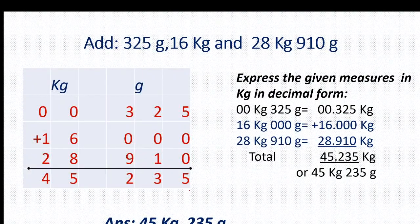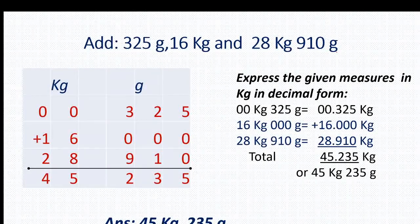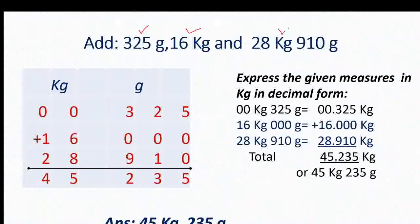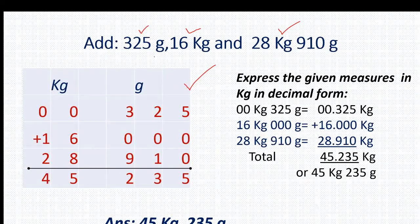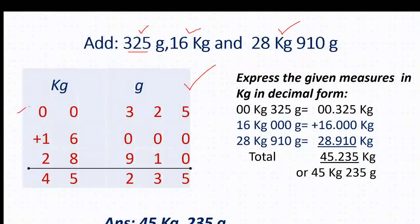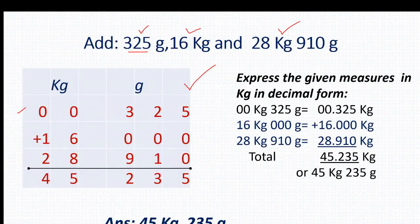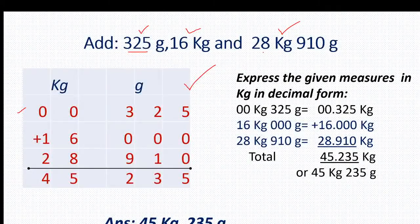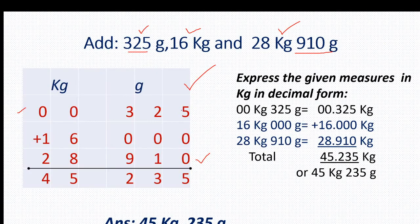Moving to the next page. Here our question is add 325 gram, 16 kg and 28 kg 910 gram. Here we have three addends. First addend is 325 gram, second is 16 kg, third is 28 kg 910 gram. First step is to write kg and gram. In the first addend, 325 gram means 0 kg, so I have written 0, 0 here. Next addend is 16 kg with 0 grams — I have written 16 under kg and 0, 0, 0 under grams. Third addend: 28 kg 910 gram — I have written 28 under kg and 910 under gram.